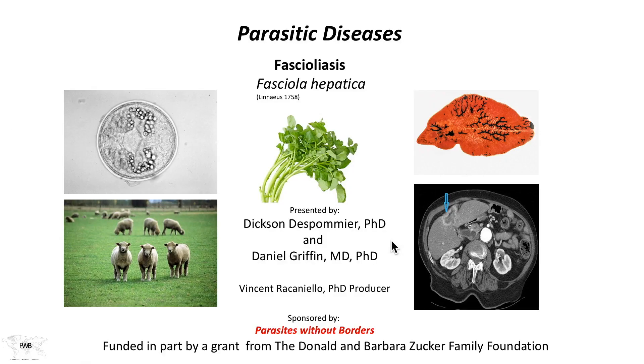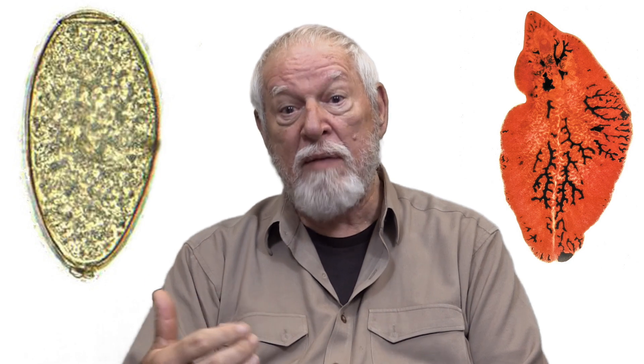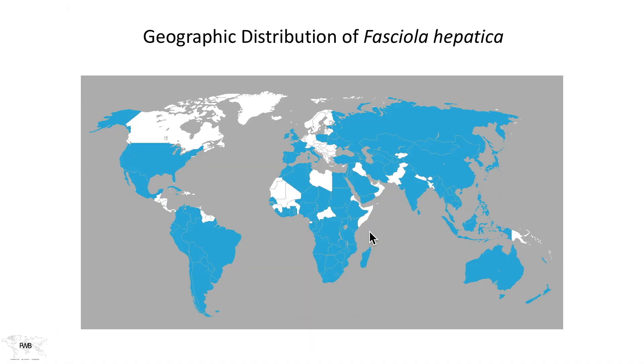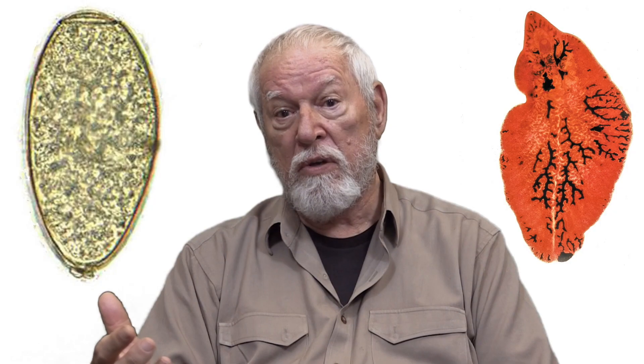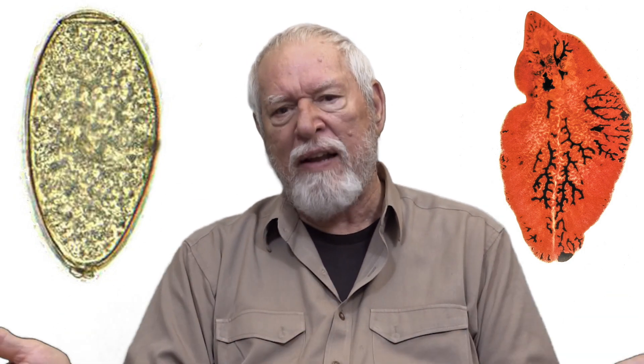Welcome to Parasitic Diseases. Today we'll be discussing fascioliasis, an infection caused by Fasciola hepatica, the liver fluke. The distribution for Fasciola hepatica is the same as you would find for the distribution of sheep raising throughout the world. It's often called the sheep liver fluke because the sheep can serve as a reservoir host for the infection, and is primarily the dominant animal infected by Fasciola hepatica.